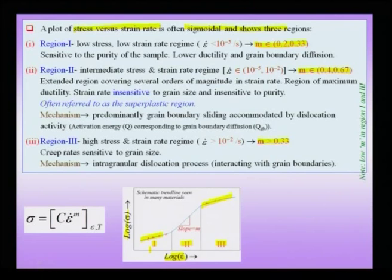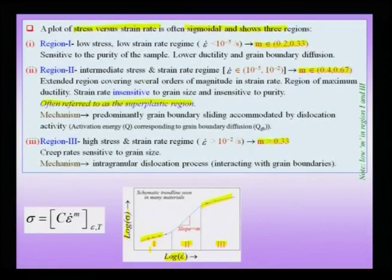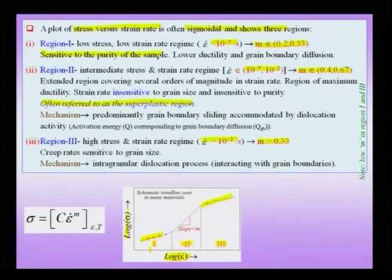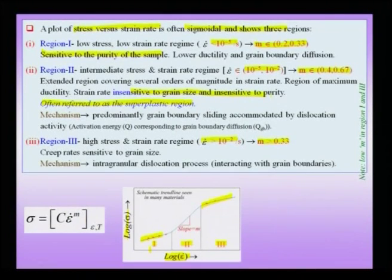Region 2 is often referred to as the superplastic regime, where we get maximum elongation. Region 1 corresponds to low strain rates, region 2 to intermediate, and region 3 to high strain rates. At very high strain rates, superplasticity is reduced. The underlying mechanisms also change between regions, as does sensitivity to sample purity. In region 1, sample purity plays an important role, while in region 2 the material is less sensitive to purity and grain size. In region 3, sensitivity to purity returns.